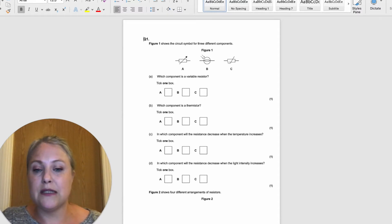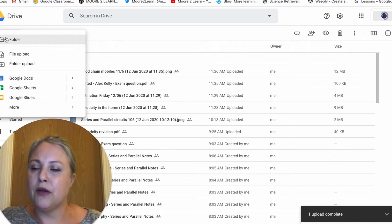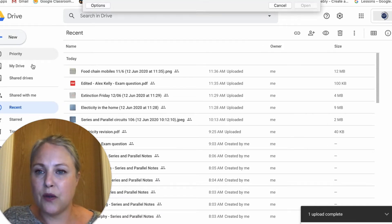So the first thing I need to do is turn this into a Google Doc. Very simply, I'm going to go into my Google Drive, click New, click File Upload, search for my word document, and then click Open. It will automatically save as a Google Doc.